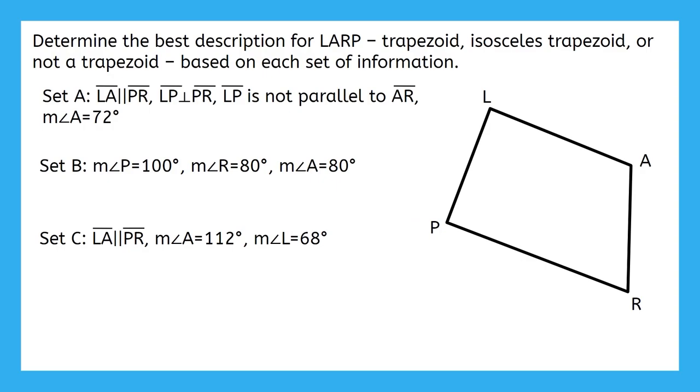Our practice problem is probably starting to look very familiar to you. This time we're asked to determine the best description for LARP. Trapezoid, isosceles trapezoid, or not a trapezoid. Based on each set of information. That means you do not have to worry about other types of quadrilaterals for this. We have three sets of information, but let's look at them one at a time. Set A says that LA is parallel to PR, LP is perpendicular to PR, LP is not parallel to AR, and the measure of angle A is 72 degrees. Pause the video here to mark these relationships in your picture.